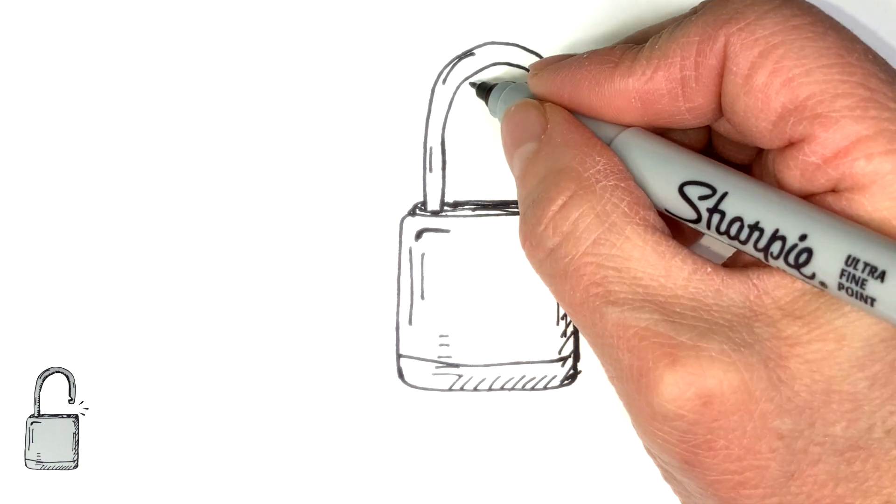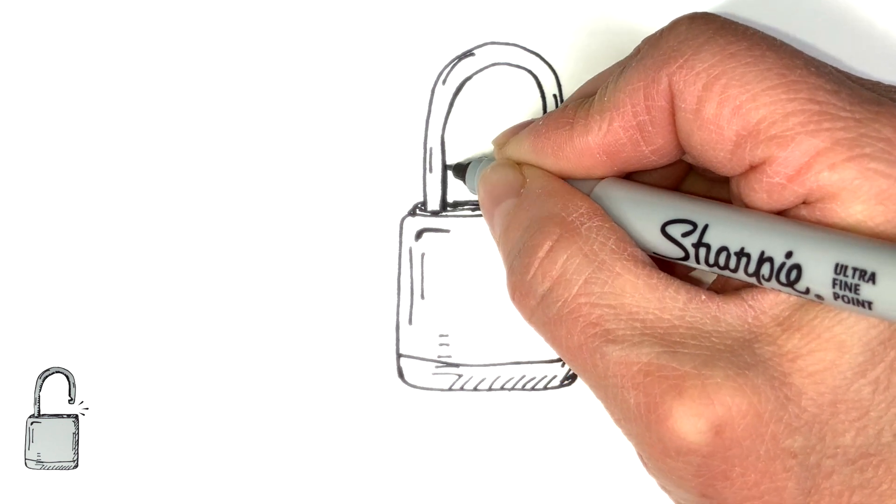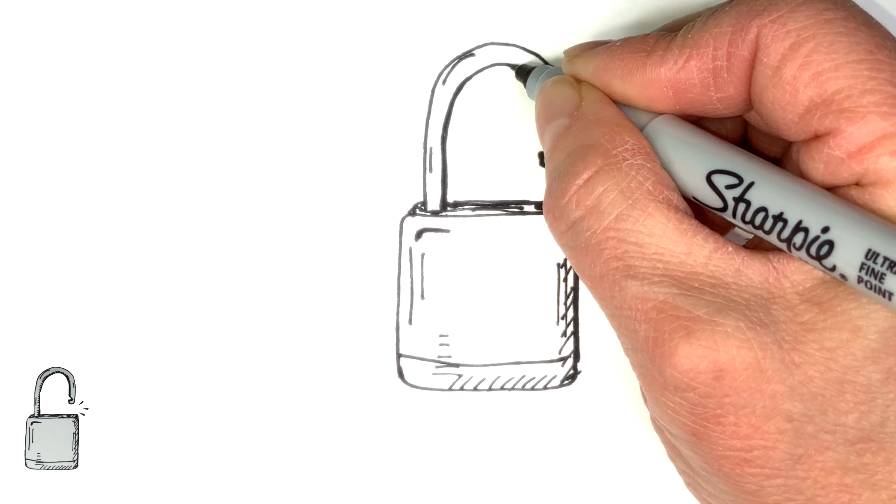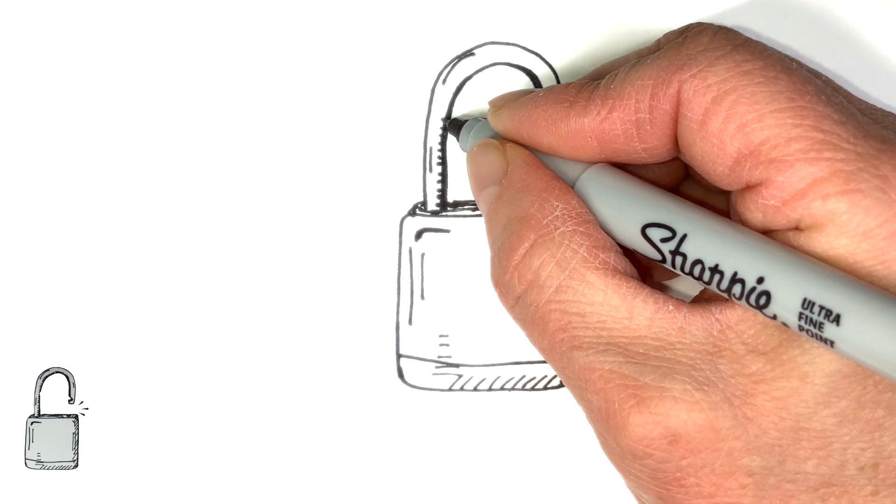And then I'm going to add some little reflection of the metal part on the shackle and then shade by making the underside a little extra thick and adding some lines to that side so it appears a little darker where it's the underside of it.